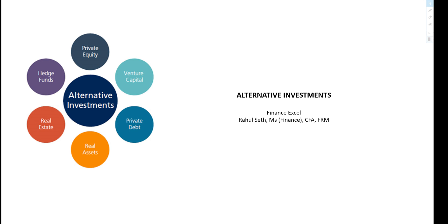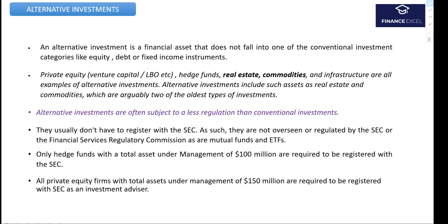Welcome to our discussion on alternative investments for CFA Level 1. An alternative investment is a financial asset that does not fall into any one of the conventional investment categories like equity, debt, or fixed income. The various types of alternative investments are private equity, hedge funds, real estate, commodities, and infrastructure — with real estate and commodities arguably being the oldest type of investments.